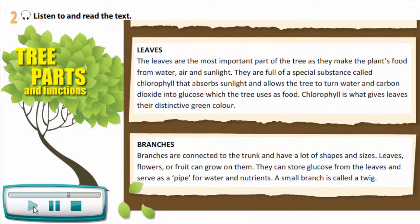Leaves. The leaves are the most important part of the tree as they make the plant's food from water, air, and sunlight. They are full of a special substance called chlorophyll that absorbs sunlight and allows the tree to turn water and carbon dioxide into glucose, which the tree uses as food. Chlorophyll is what gives leaves their distinctive green color.